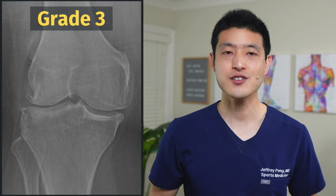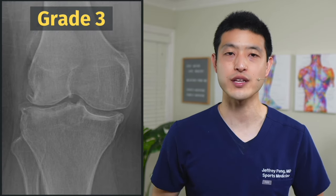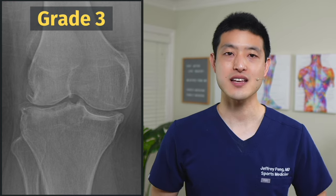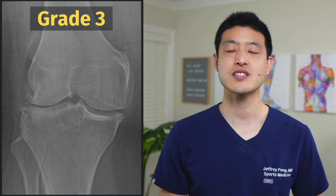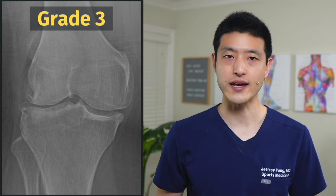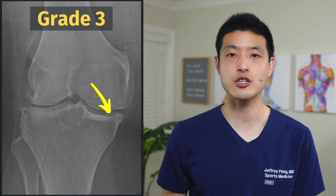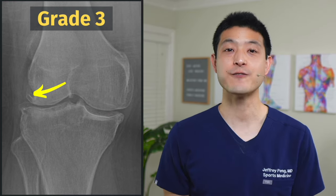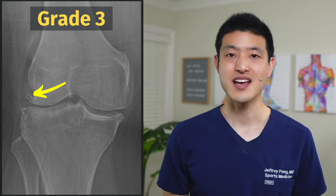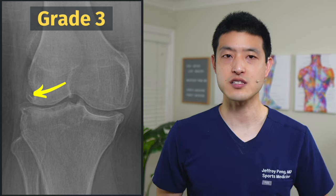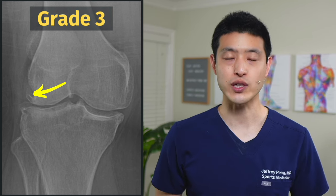Now we move on into moderate osteoarthritis, which is KL grade 3. As the arthritis gets worse, the cartilage between the bones starts to erode away. This causes joint space narrowing, which leads to sclerosis of the bones and even deformity at the ends of the bones. X-rays start to show multiple osteophytes, as well as more and more joint space narrowing.